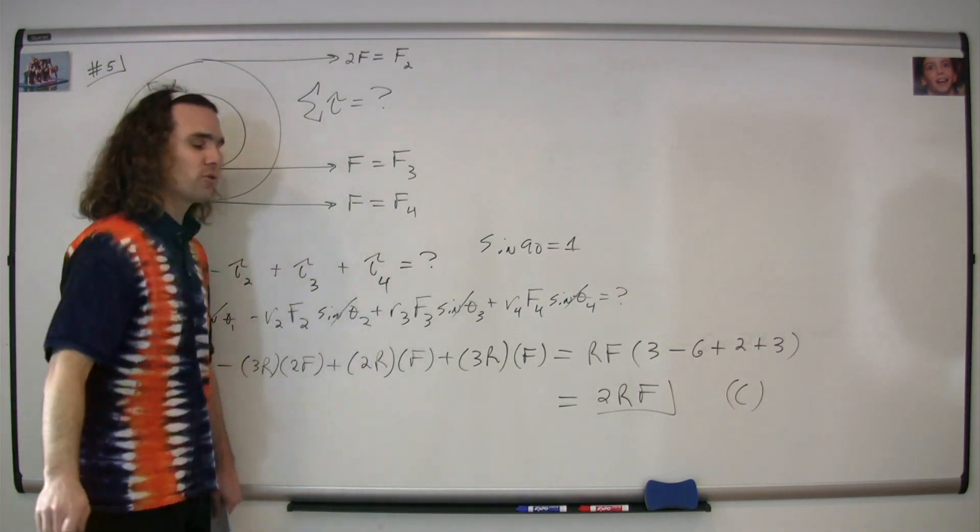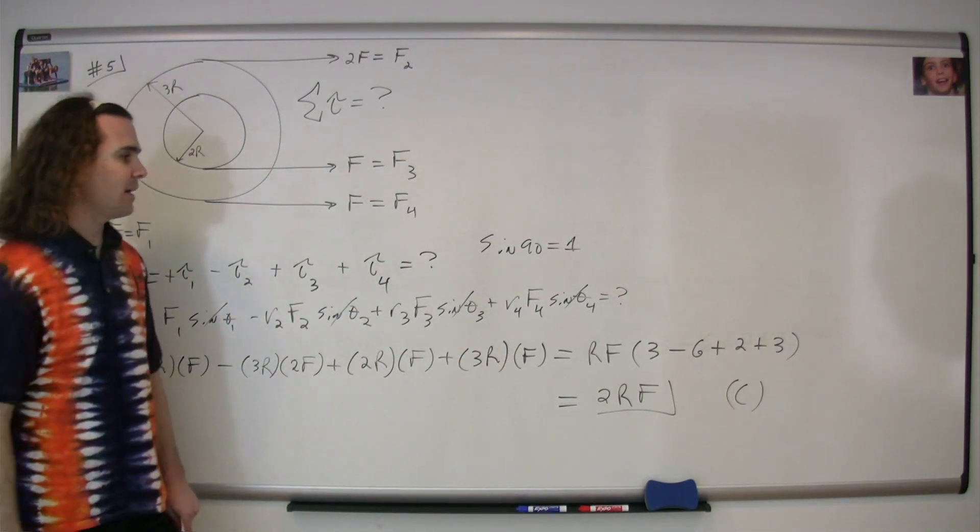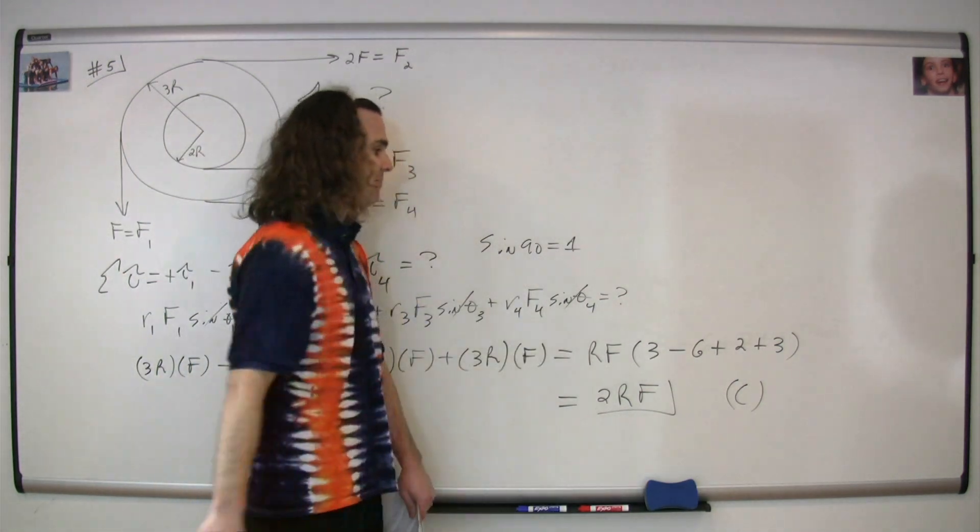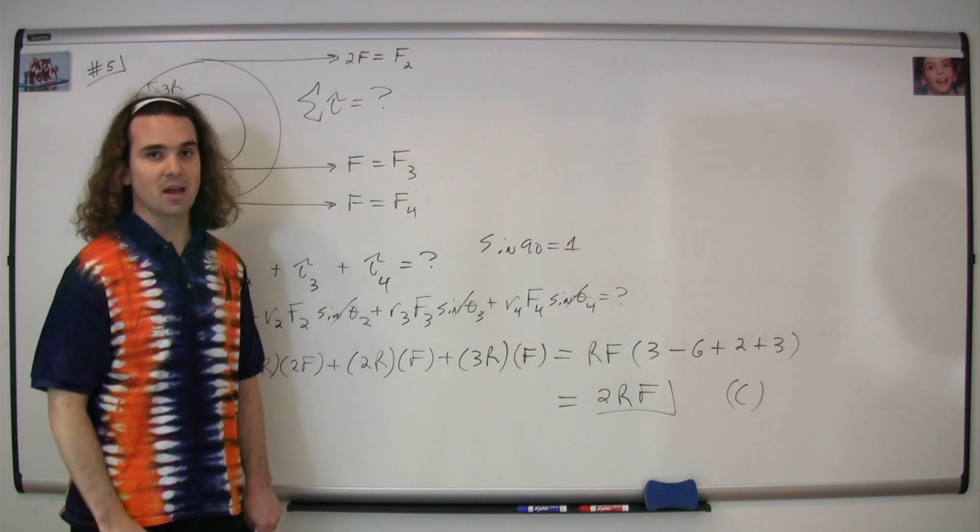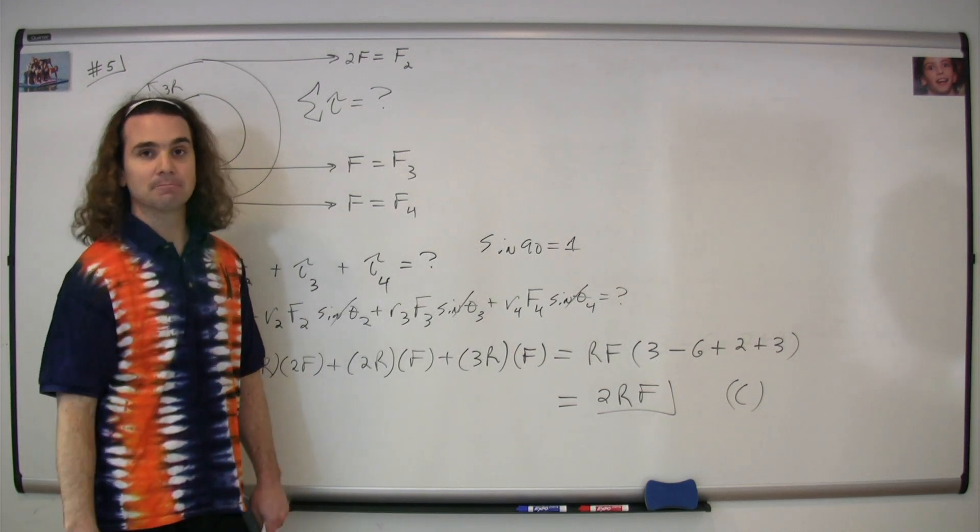You can see that the radius times the force is common throughout, so we can pull that out, and we get RF is equal to the quantity three minus six plus two plus three, which works out to be two times the radius times the force. The correct answer is C.